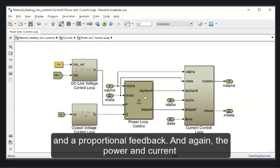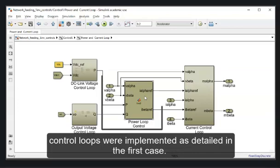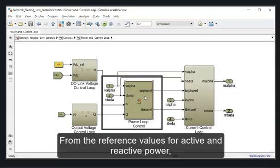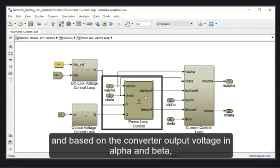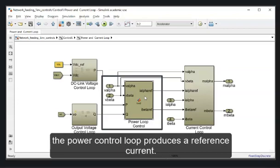And again, the power and control loops are implemented as detailed in the first case. From the reference values for active and reactive power, and based on the converter output voltage in alpha and beta, the power control loop produces a reference current.